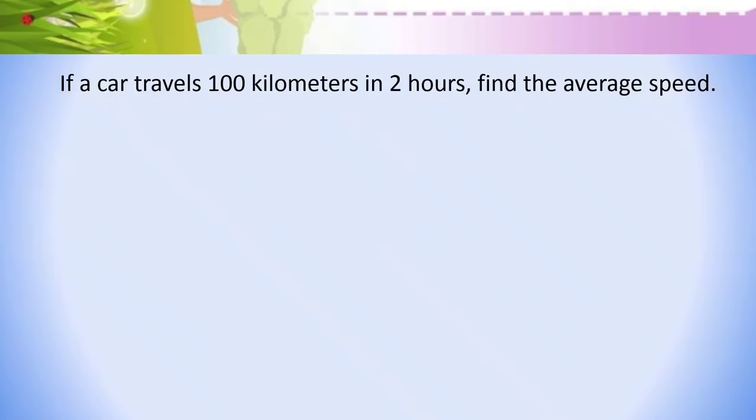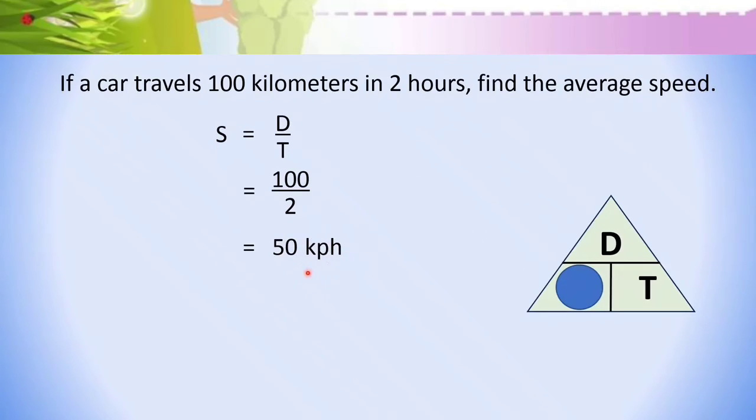Let's try to answer this example number one. If a car travels 100 kilometers in two hours, find the average speed. Now let's use the DST triangle. We are looking for the speed, so just cover the speed or the letter S. So the formula in finding speed is speed is equal to D over T. Now let's replace the value of D and T. The value of D is 100 kilometers and the time is 2 hours. And that would be 100 over 2. So 100 divided by 2 is equal to 50. What is the unit that we need to use? Since we're looking for the speed, in order for us to know what unit will be used, just look back again on the word problem.